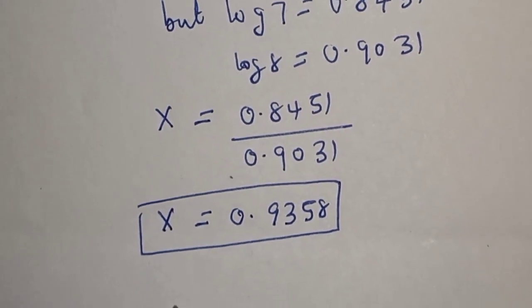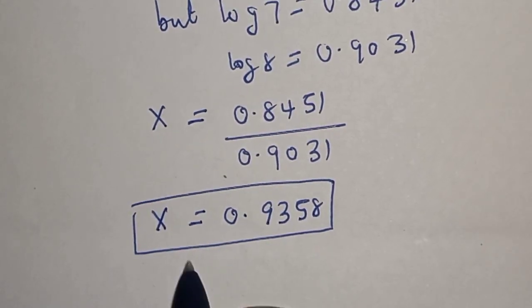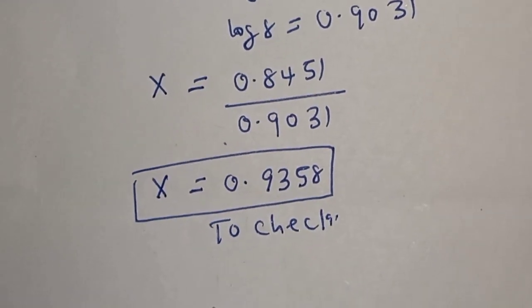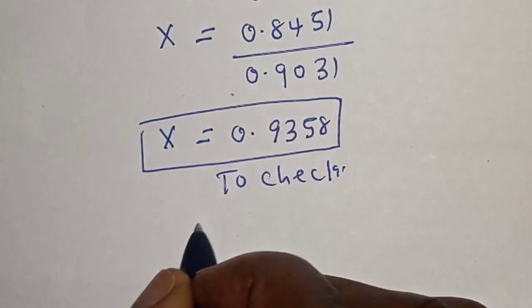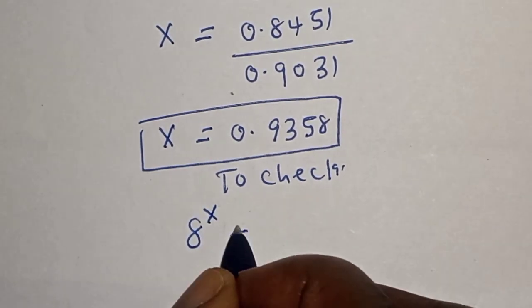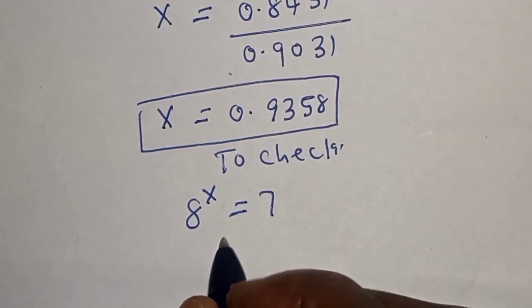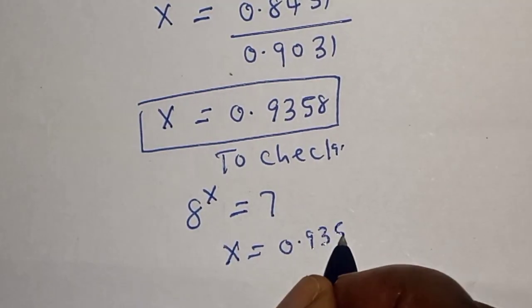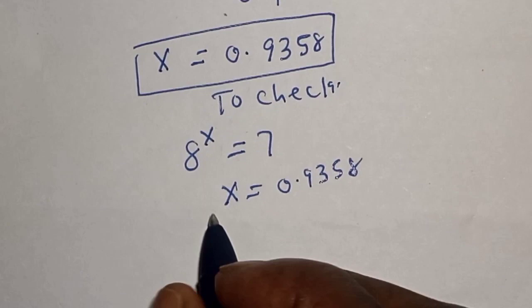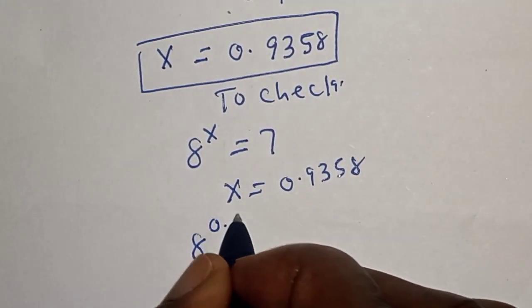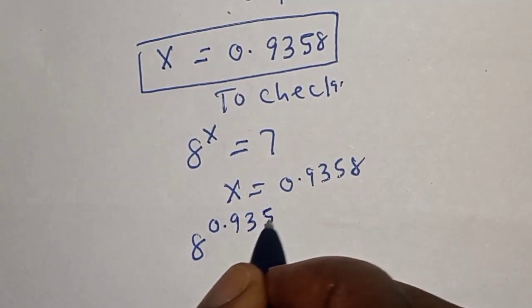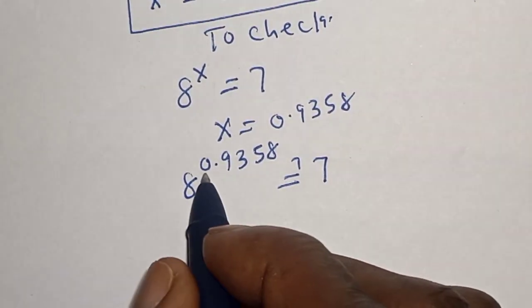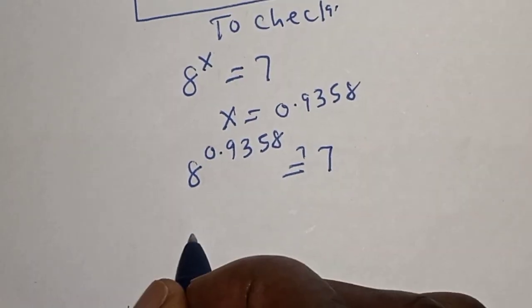We can check to confirm if our answer is right or wrong. To check, we have the given equation: 8 raised to power x is equal to 7. But x is equal to 0.9358, then we have 8 raised to power 0.9358 must be equal to 7. And 8 raised to power 0.9358 is equal to